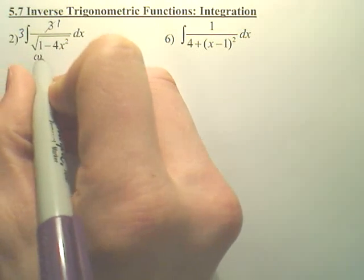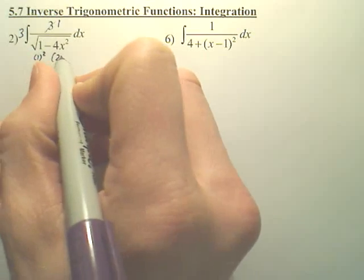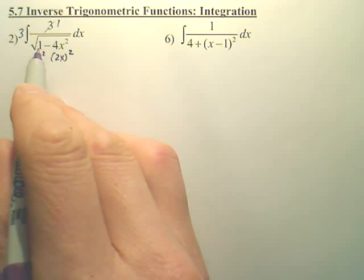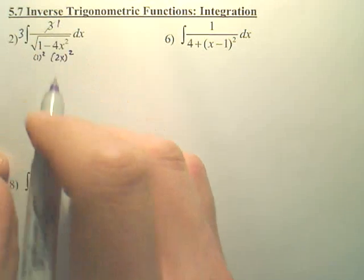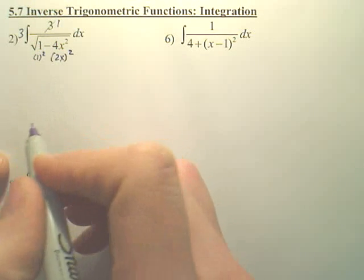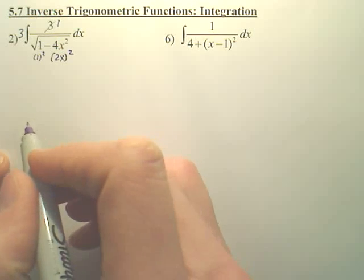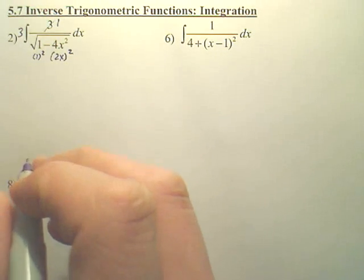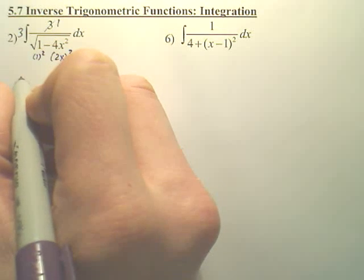And then what you notice here, that's a 1 squared, and this is a 2x squared. Because for arcs, this needs to be a squared, this is u squared, and it has to have a 1 on top. It's just the structure of arcs if you look at your formulas. So what we notice, this is arcsine. So the answer is going to be arcsine.